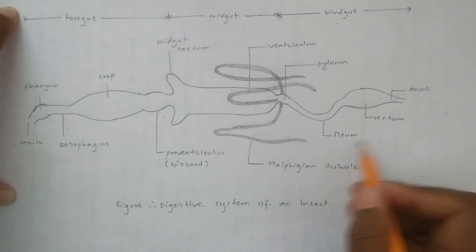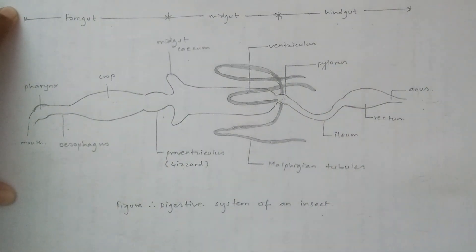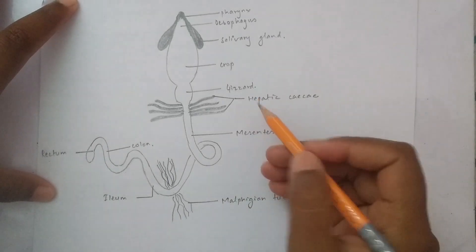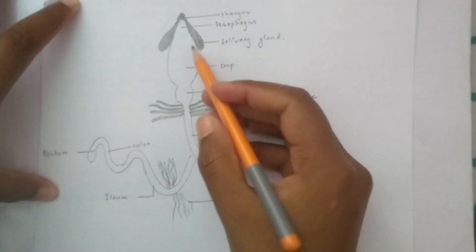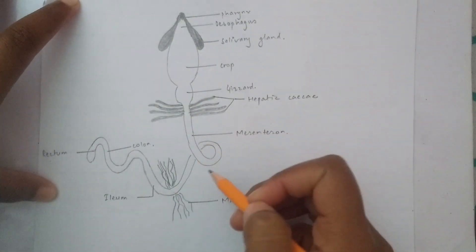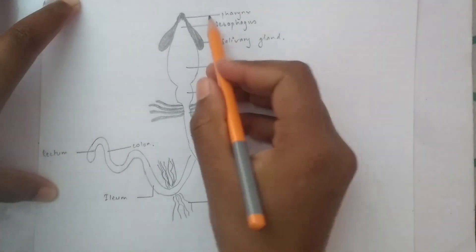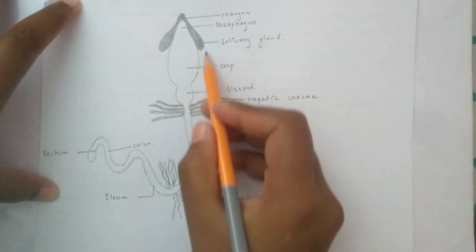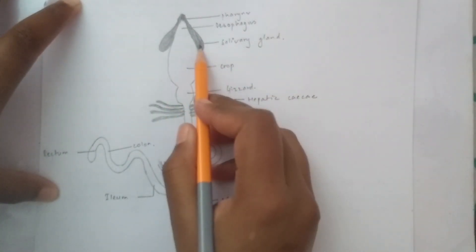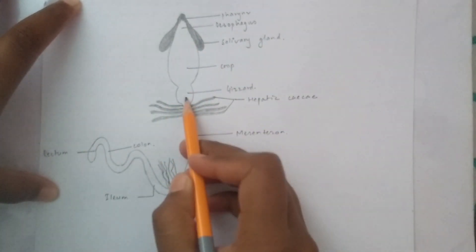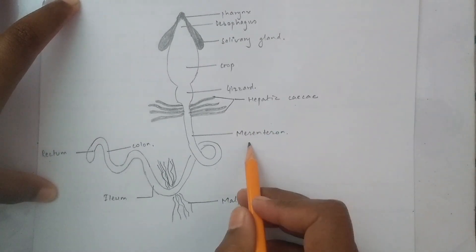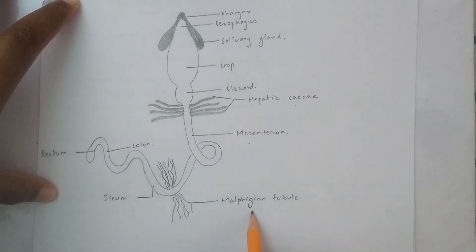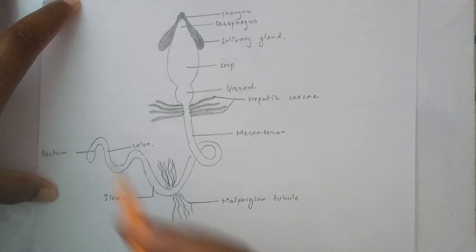In the hindgut, we have ileum, rectum, and anus. The digestive system of insects includes pharynx, esophagus, salivary gland, crop, gizzard, hepatic siccum, mesenterone, Malpighian tubules, ileum, colon, and rectum.